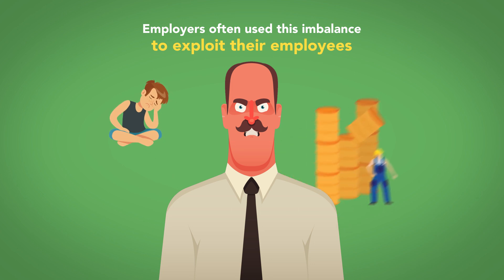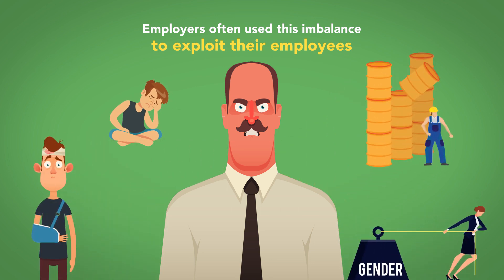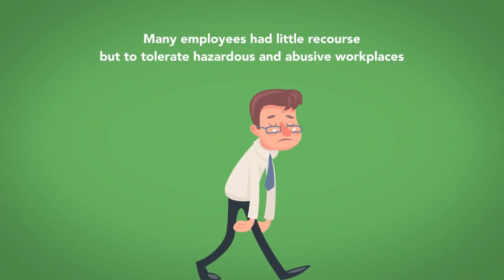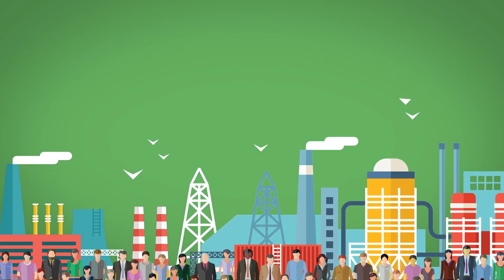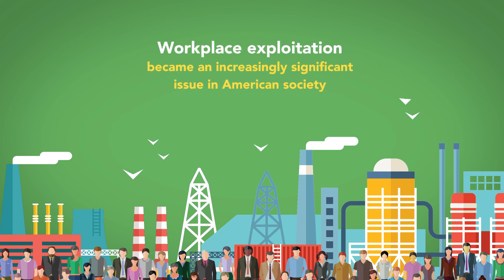Child labor, hazardous workplace conditions, on-the-job injury or disability, and discriminatory treatment were commonplace in American workplaces. Many employees had little recourse but to tolerate hazardous and abusive workplaces, as no social unemployment programs existed at that time. The Industrial Revolution brought a huge number of new workers into the labor market, and workplace exploitation became an increasingly significant issue in American society.